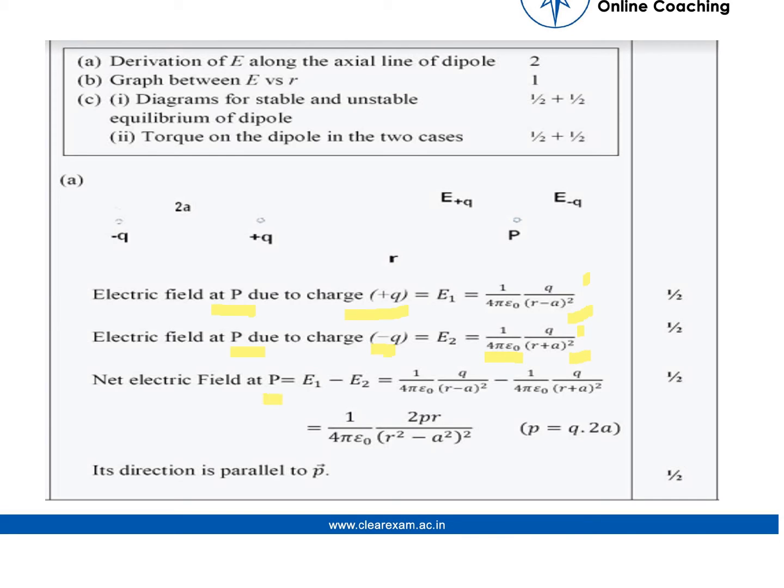Net electric field at point P is E1 minus E2. Subtracting these, the final answer is 1 over 4 pi epsilon naught times 2PR over R squared minus A squared whole squared, where P equals Q times 2A. Its direction is parallel to P.